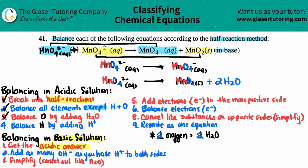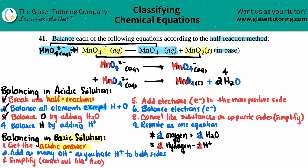Now we balance the hydrogens by adding H⁺. If you need one hydrogen you add one H⁺, two hydrogens you add two H⁺, and so on. Looking at the top half reaction, there's no hydrogen at all, so nothing to balance. On the bottom, since I added the water, I have hydrogen to balance — two hydrogens from each H2O and there are two of them, so two times two is four total. I have no hydrogen on the left side, so I need to add four H⁺ on the left.